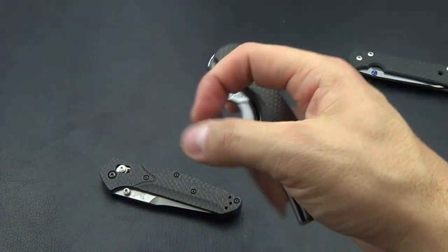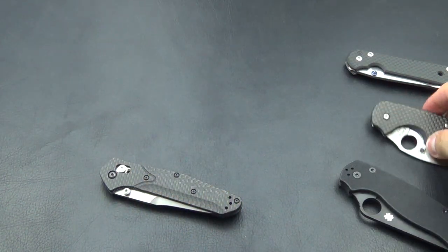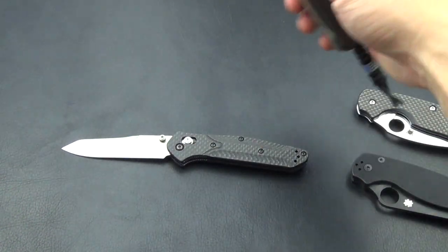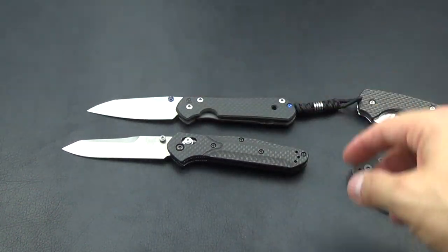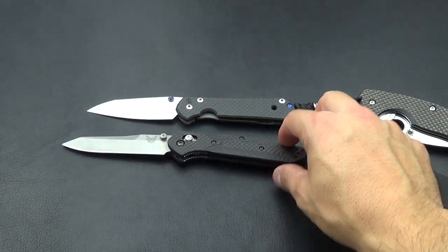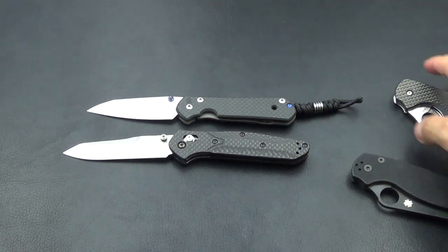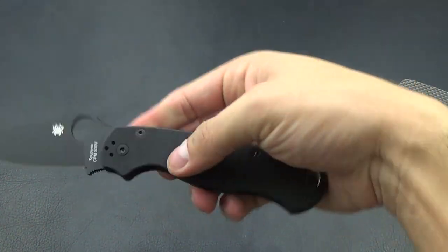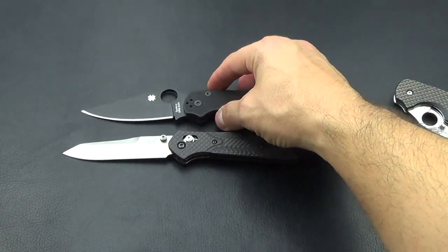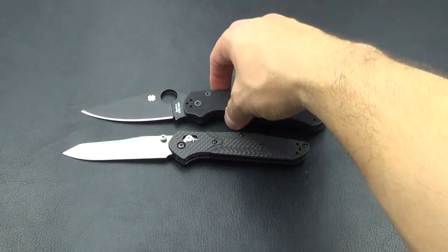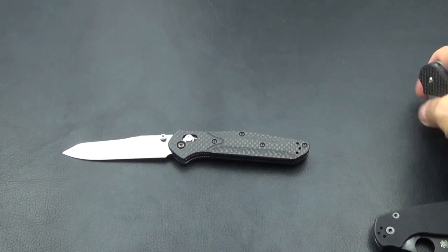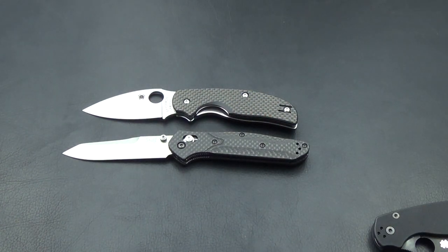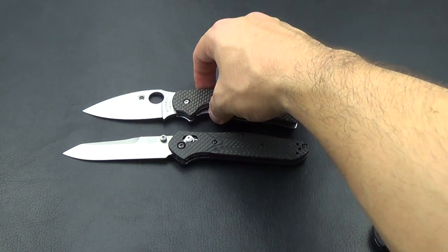This is another great EDC knife - Sage One. But we'll do a few size comparisons. Here's a small Sebenza. That's the Insingo carbon fiber. So you see how much more cutting length you get. And at two and a half ounces, that is crazy. Paramilitary 2. All these I brought out because they are like EDC Hall of Famers there. And Spyderco Sage One.